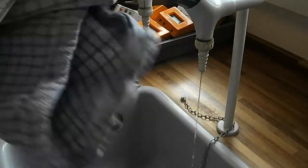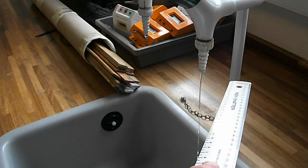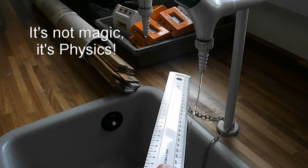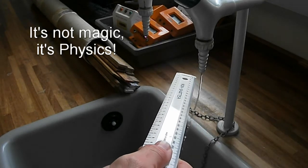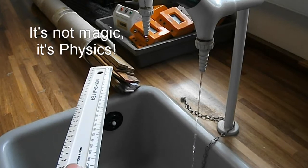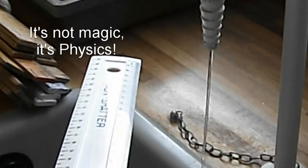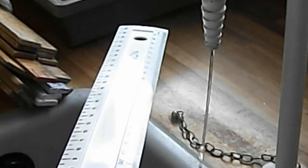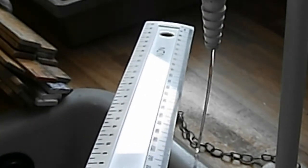I'm going to take my ruler. I'm going to rub it, and then bring the ruler near to the water. We should see it being deflected from the vertical.